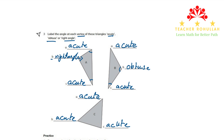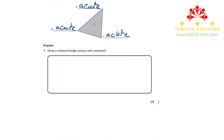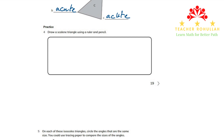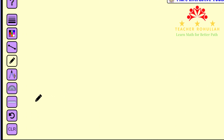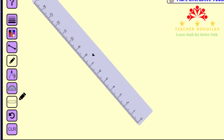Now that we are done with question three, let's go to question number four. It is asking us to draw a scalene triangle using a ruler and a pencil. Because I cannot use ruler and pencil in this application, I have solved it in another application. Let's go and watch it together.